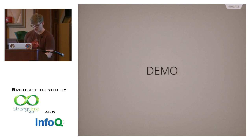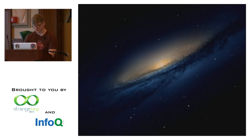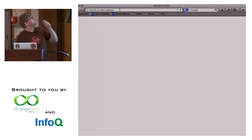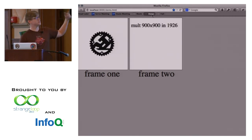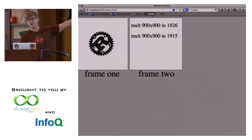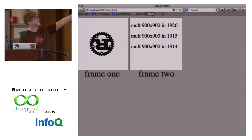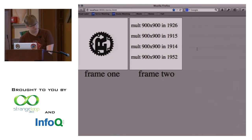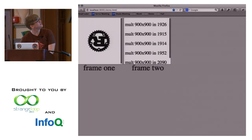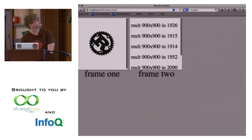I wanted to show a little demo so you can see that Servo is working — it's not just in my imagination. First, let me show you the parallel iframe demo. In this iframe, we're just running a simple animation loop — we change the image source of an image through eight different images in a loop. On the other side, we're multiplying a 900 by 900 matrix, which is expensive — it takes about two seconds. You can see it rests for a while, then starts multiplying, and as soon as it does, the animation completely stops. Not only does the animation stop, but the whole UI is unresponsive. This is in Gecko, and it works the same in other browsers too.